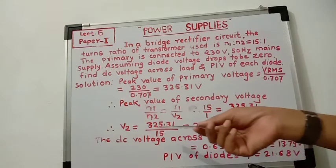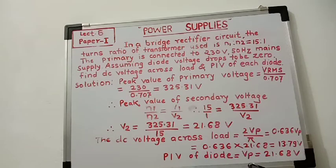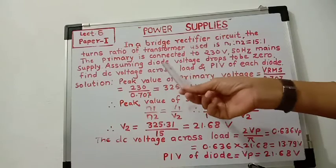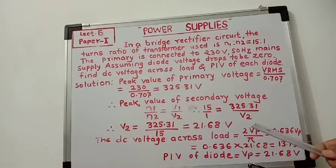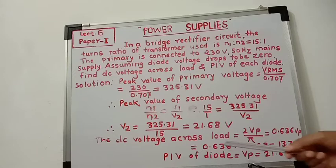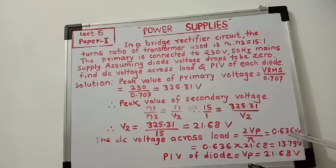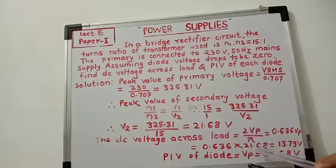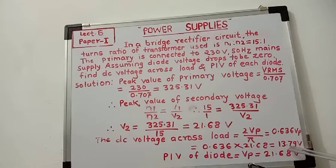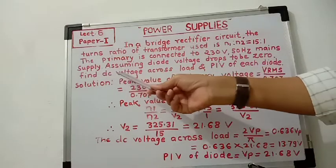We have now calculated the secondary peak voltage. Next, we have to calculate the DC output voltage, that is the DC load voltage VDC. In a bridge rectifier or full wave rectifier, VDC equals 2VP upon pi, that is 0.636 multiplied by VP, where VP is the peak value of the secondary voltage. VP is 21.68 volts, so 0.636 multiplied by 21.68 equals 13.79 volts. So we have calculated the DC voltage as 13.79 volts.